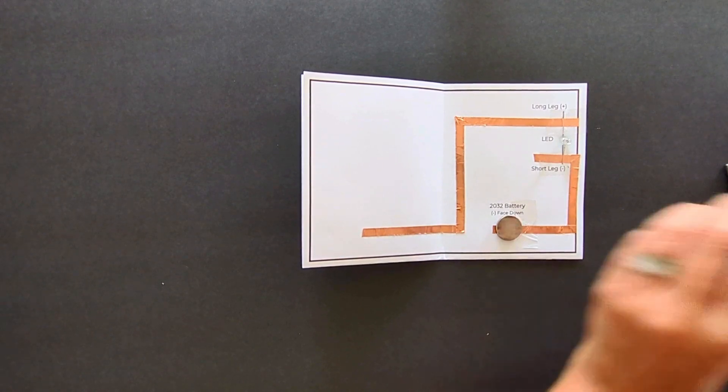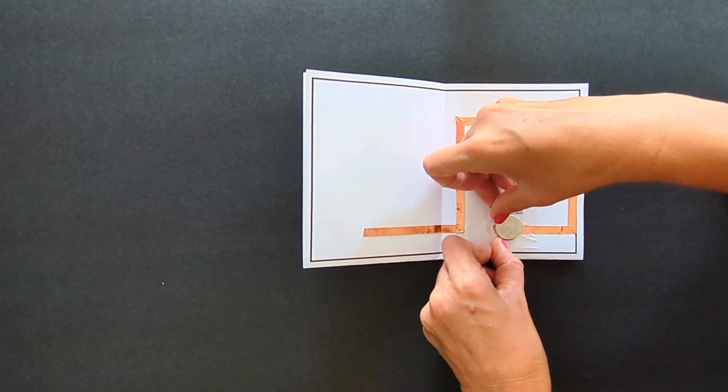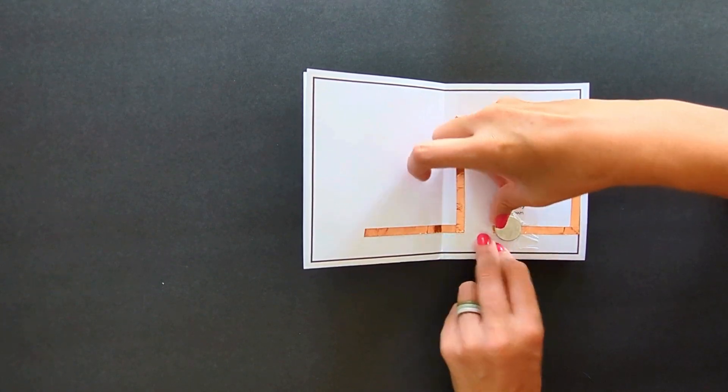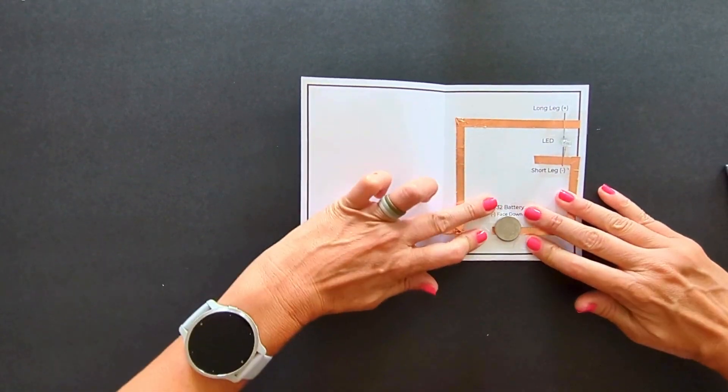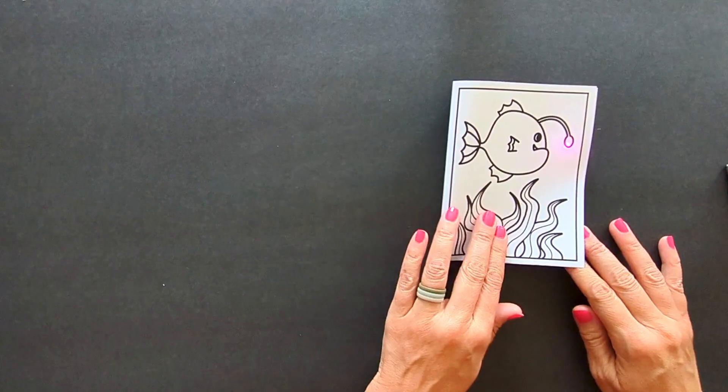Now attach the battery. Place it with the positive side facing up. Make sure that when you tape down the battery, a portion is still exposed so that when you fold the card over, the copper tape makes contact with the battery.